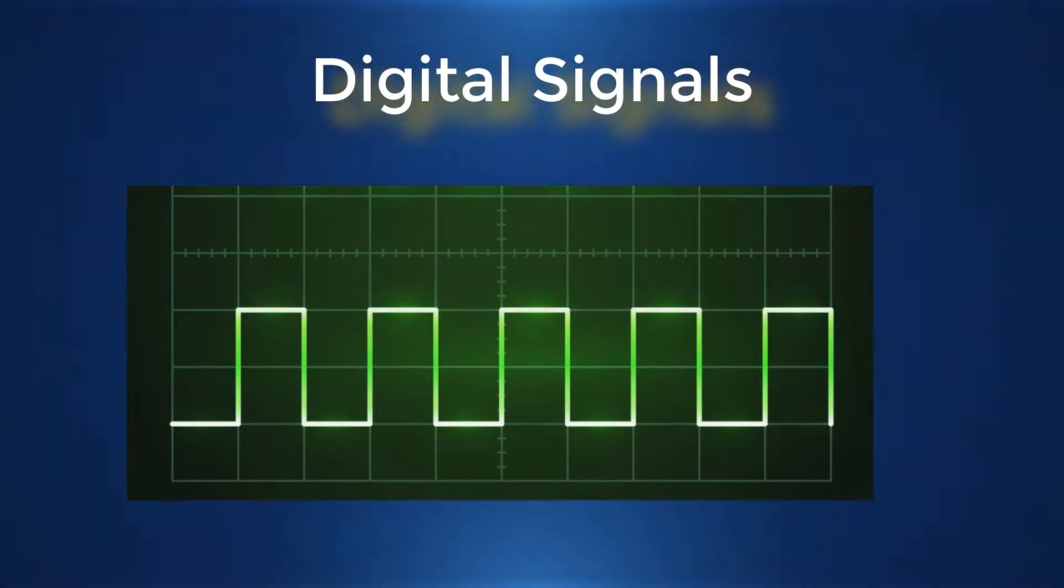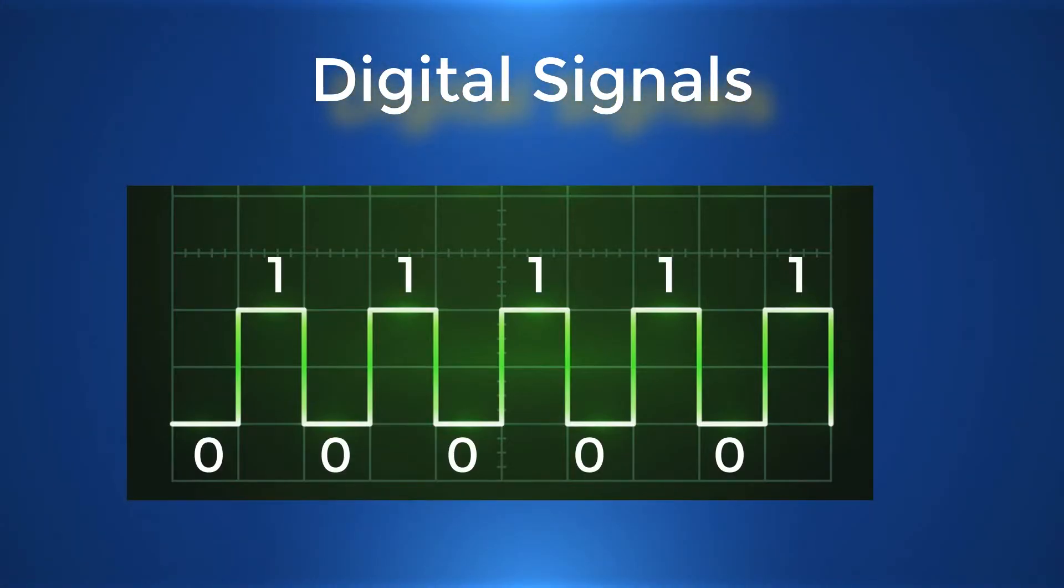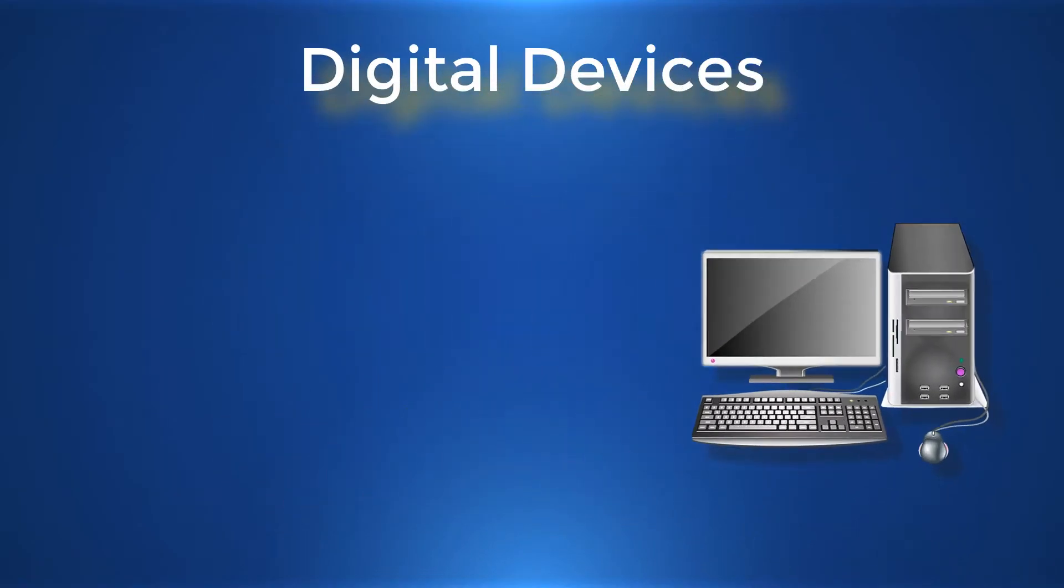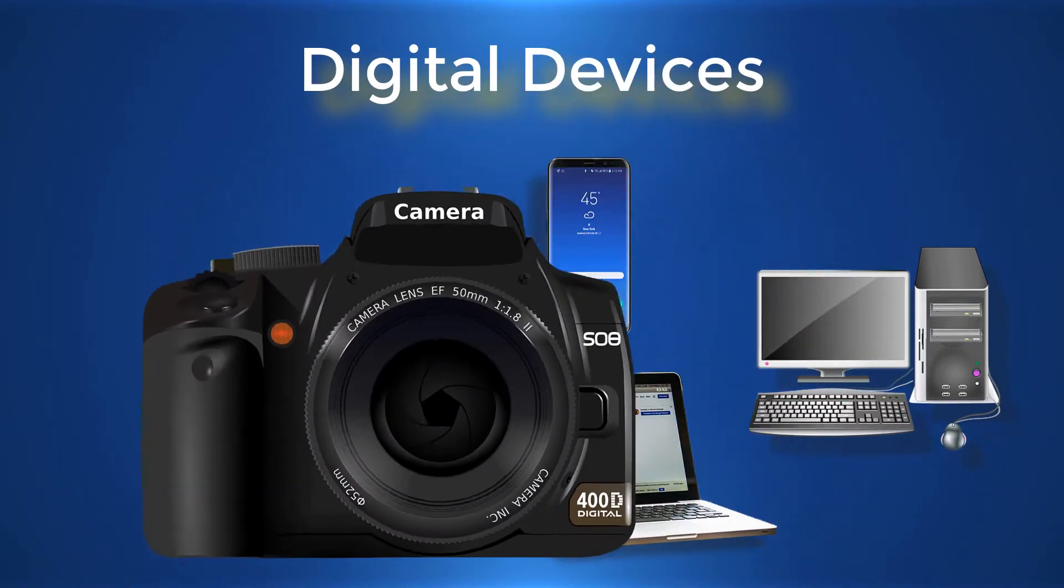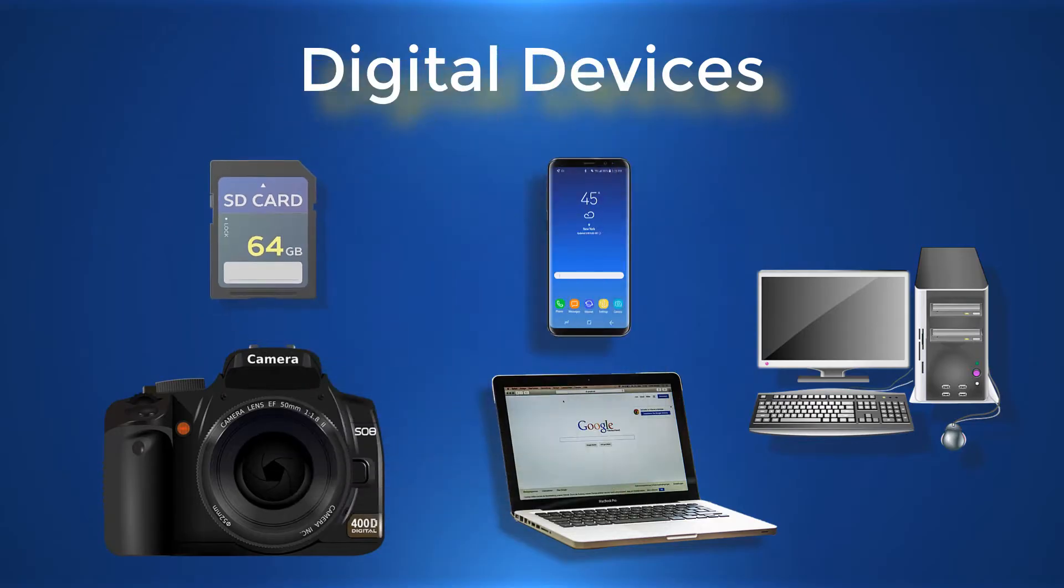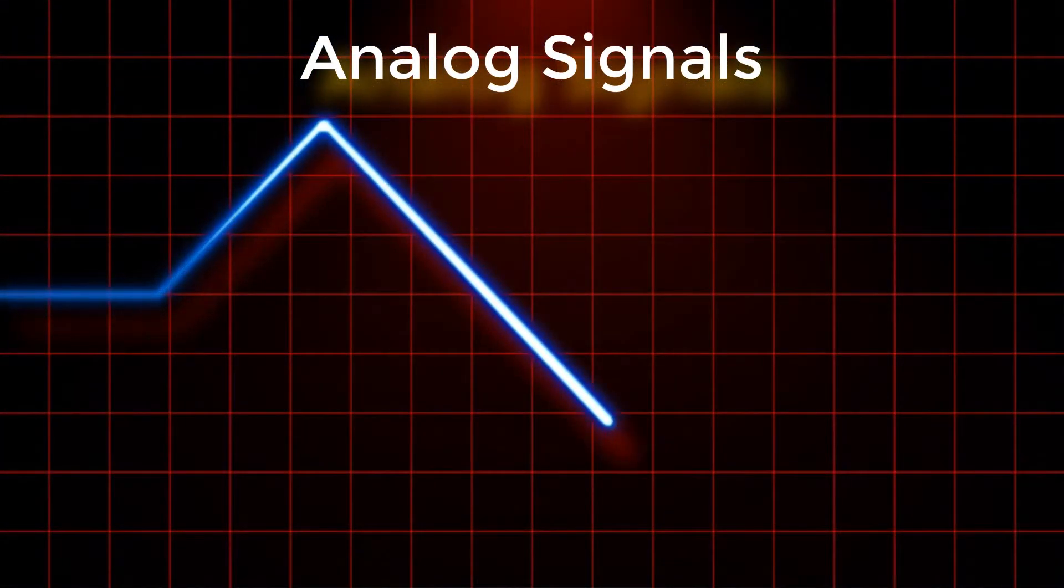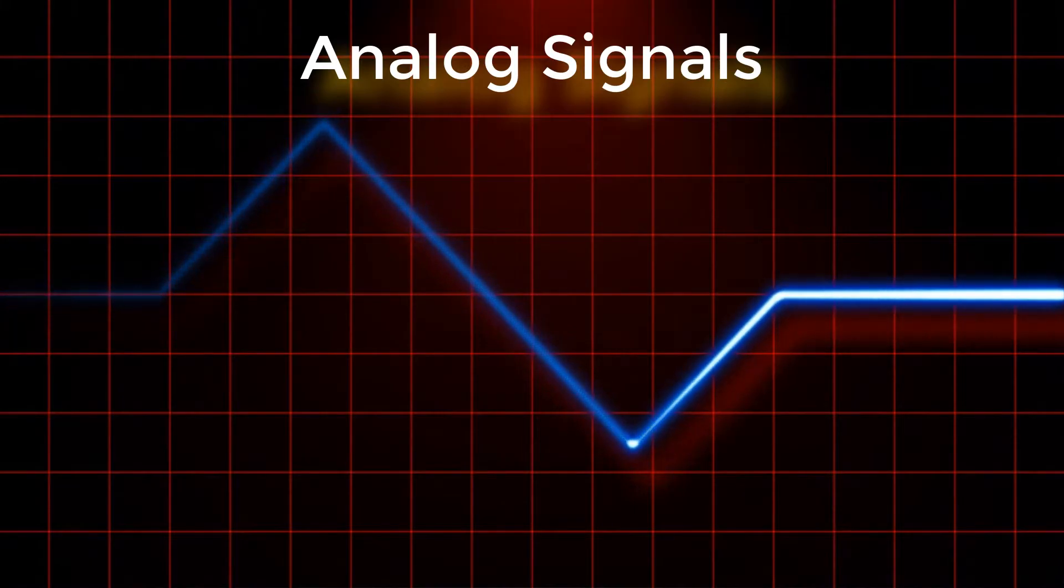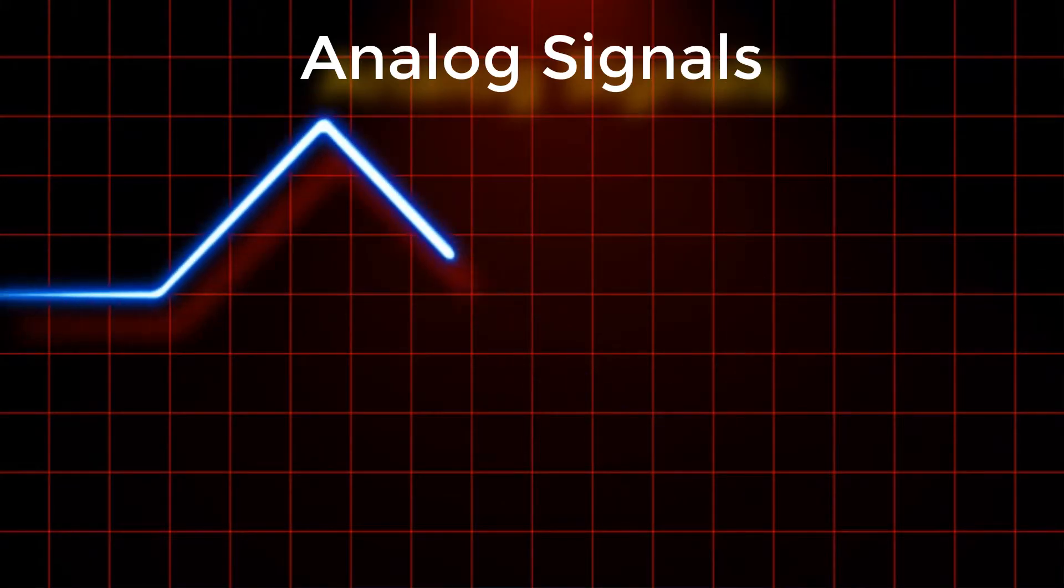These signals are in the form of digits which are zero or one. Examples of digital devices are computers, laptops, mobile phones, cameras, and storage devices. Analog devices work on analog signals. Analog signals are time-varying quantities.